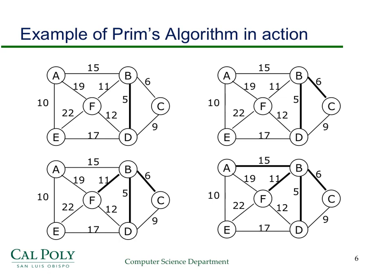Continuing Prim's example: we find the closest vertex to the current subtree. D is only 9 away but it's already in the subtree. The closest new vertex is A, which is 15 away from B, so we add A — this gives T5. Then we see that E is 10 away from A, so we add E and the edge from A to E, giving us the complete minimum spanning tree containing all vertices.